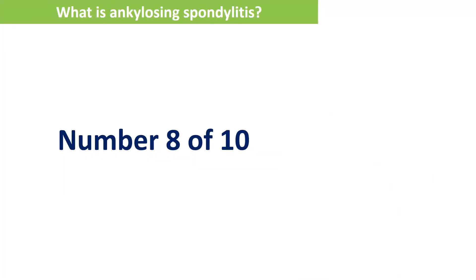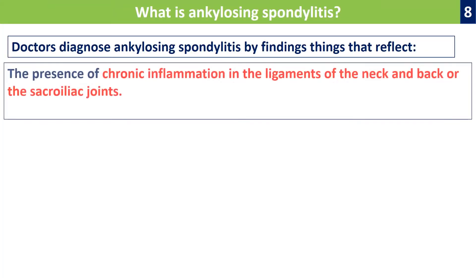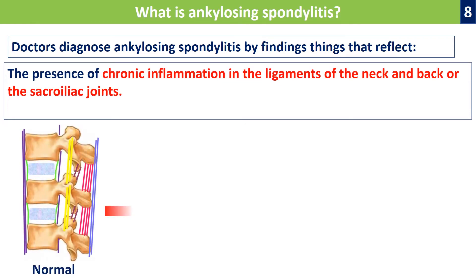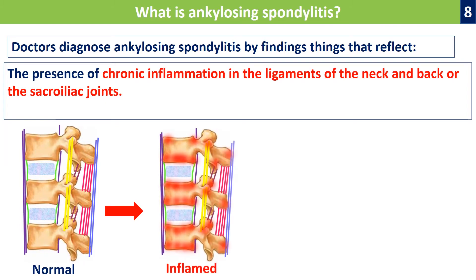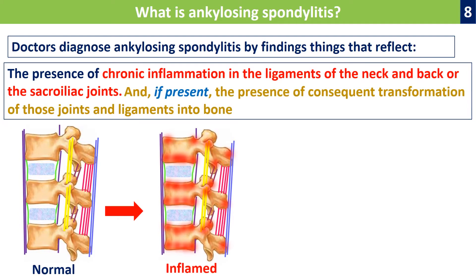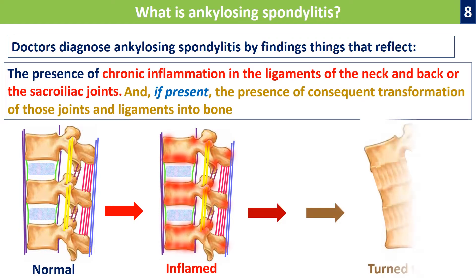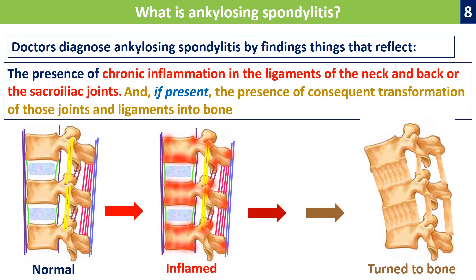Number eight: doctors diagnose ankylosing spondylitis by findings that reflect inflammation of the neck and back, or the bony transformation of the ligaments of the neck and back. So either of those two processes is what we rely on to diagnose ankylosing spondylitis — inflammation of the neck and back, or signs that reflect the transformation of the ligaments into bone.